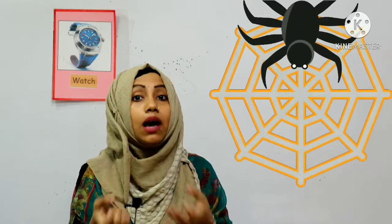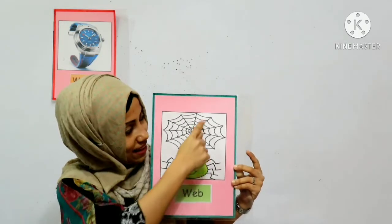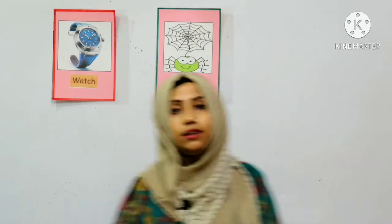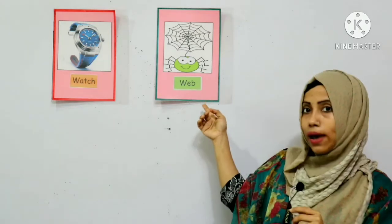Now we are going to learn another word. Tell me — when there is a spider, what do they make on the wall? Yes, they make a web. In Bangla, what do we call web? Jal — makrosha jal, spider web. So we are going to learn web. This is called web. This is our baby spider and this is the web.